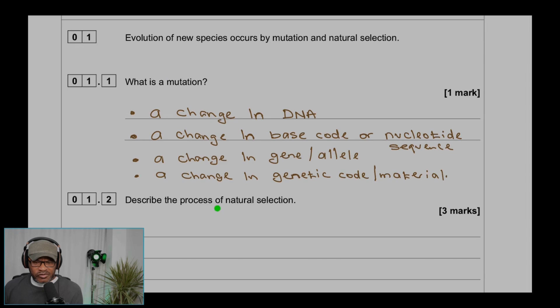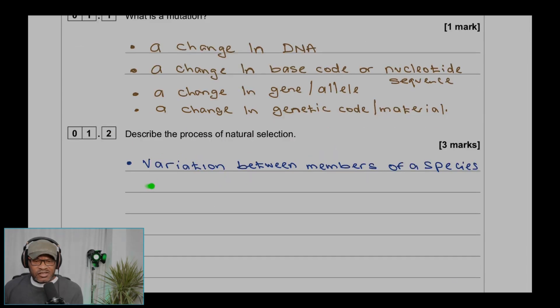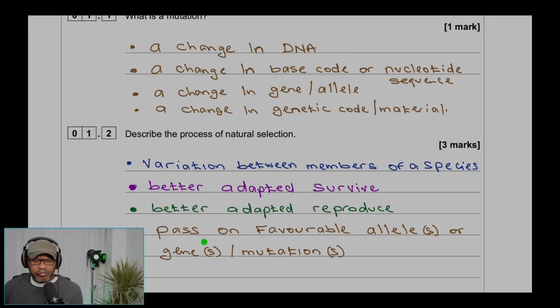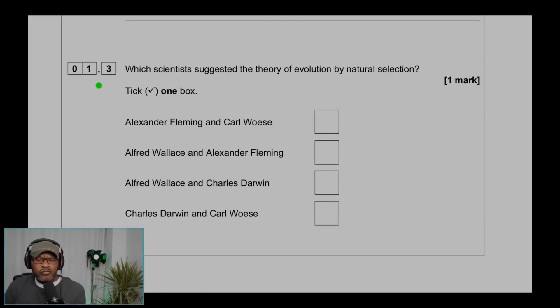Question 1.2: Describe the process of natural selection. There is variation between members of a species. Better adapted will survive. Better adapted will reproduce, pass on favorable alleles or genes or mutations to their offspring.